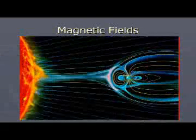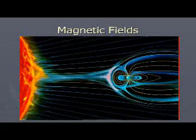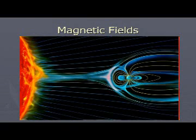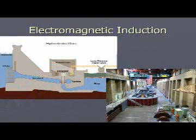Then we're going to talk about magnetism and sources of the magnetic field — where does magnetism come from, how is it related to electricity — and then we're going to talk about electromagnetic induction: how are we able to actually make electricity from magnetism and how are we able to make magnetism from electricity.